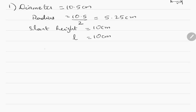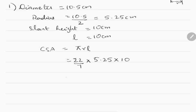We are asked to find the curved surface area. The formula is pi into R into L, which is 22/7 into 5.25 into 10, which comes to 165 cm squared.